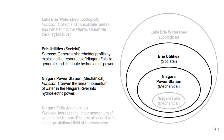Returning to the Lake Erie watershed as an ecological system and Niagara Falls as a mechanical system — introduce engineers and you no longer just have elements of nature. We might engineer Erie Utilities as an organization in upstate New York, whose purpose is to generate shareholder profits by exploiting the Lake Erie watershed and Niagara Falls. That societal system then builds a power station — a mechanical system for converting the linear momentum of water in the Niagara River into hydroelectric power. We implement societal systems with their mechanical systems to achieve engineering ends within ecological systems.